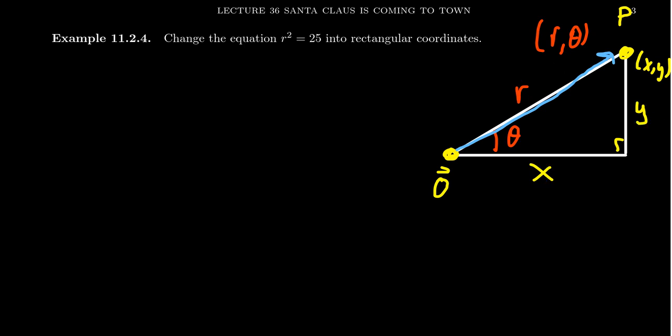If we want to think about it in terms of complex numbers, we have some complex number z, then the hypotenuse is just the modulus of the complex number. This is just the argument of the complex number. This would be the real part, this would be the imaginary part.